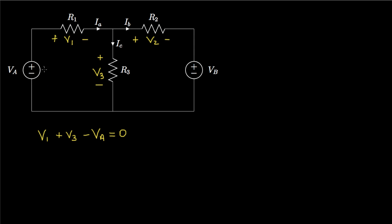Moving to the other loop and starting in a corner, the first drop is V2, then we drop by VB, then we have a negative drop of V3, arriving back at the starting location. We set that sum equal to zero.